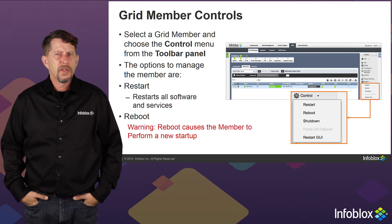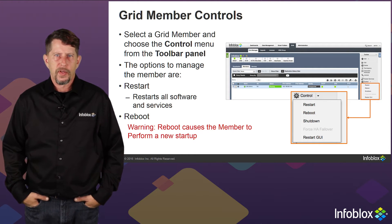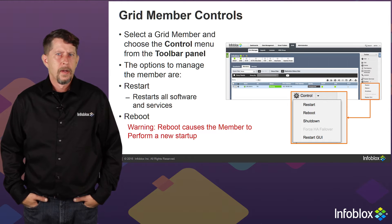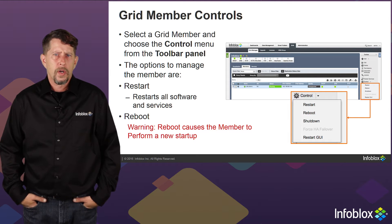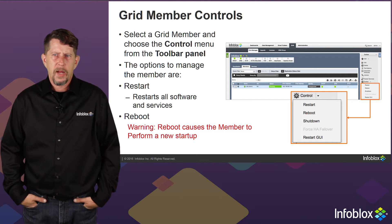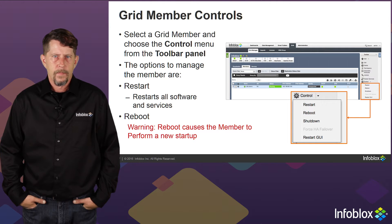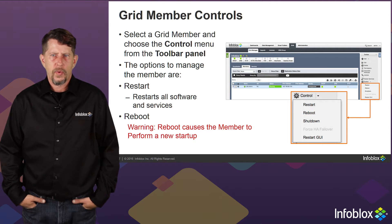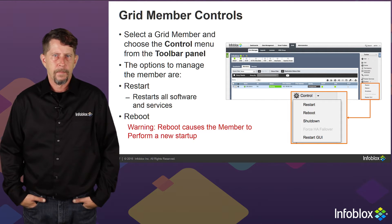Let's look at the different controls available for grid members. We select the grid member and go to the Control drop-down menu in the toolbar. The options we have are Restart, Reboot, Shutdown, Force HA Failover, and Restart the GUI.